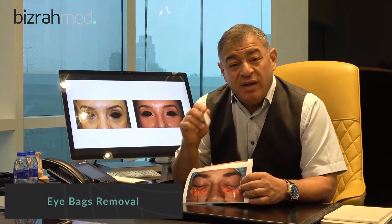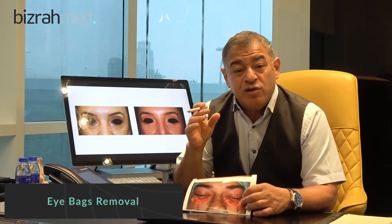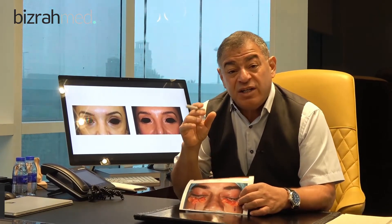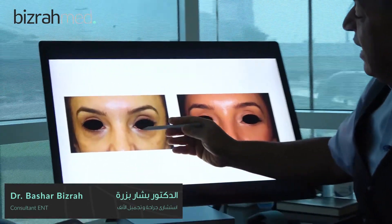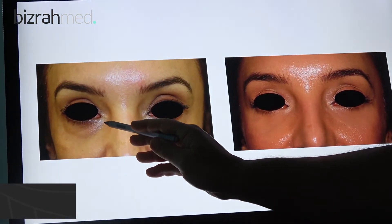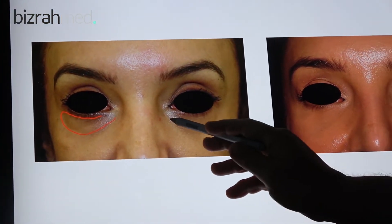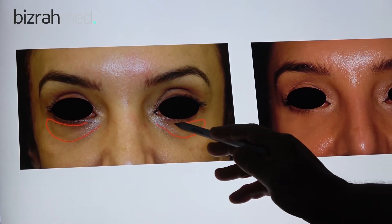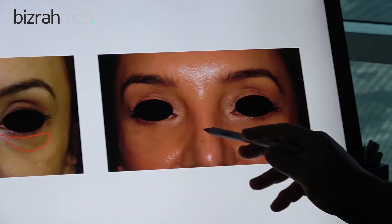Eye bags, or the swelling under the eyes or around the eyes, is caused by the collection of fat in the eyelids. Looking at this case, for example, this is a case of lower eyelid bags, and you can see the fatty bags in this area very clearly — again seen here very clearly — and then removed by a trans-conjunctival approach.